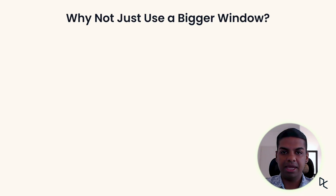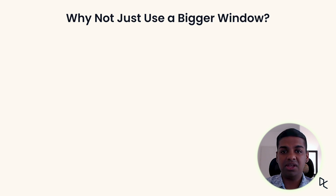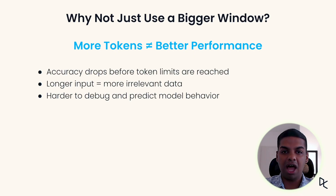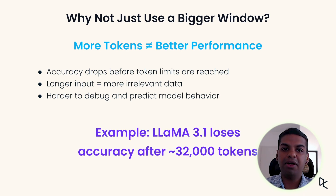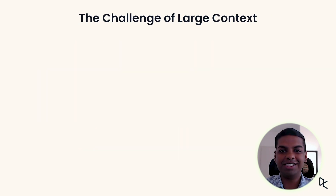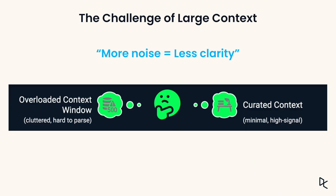You might wonder: why not just give the model everything? Isn't it better to always give the model more context? But that does not actually always work. While large context windows are impressive and could help with outputs, performance often drops at about 35,000 tokens — when the context is bigger, performance might actually drop. The model struggles to attend to everything, so important details can get lost in the noise. It is not just about size, it is more about signal. A large, cluttered context window can confuse the model, while a curated one — focused and relevant — helps the model reason better, make fewer mistakes and stay aligned to users' goals.